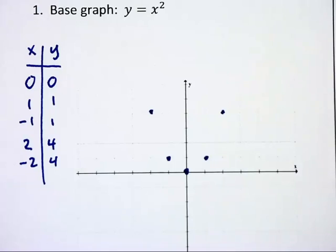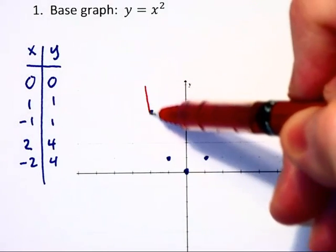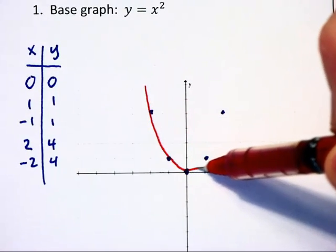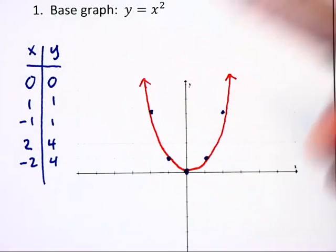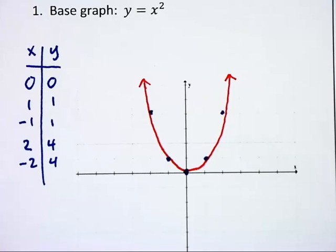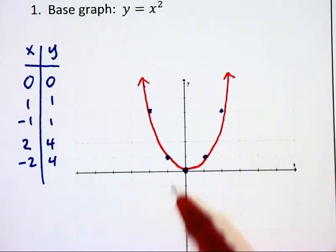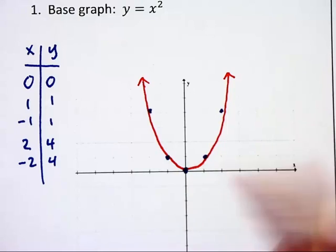As you can see, we are going to have a parabola or u-shaped graph that goes upward forever, and I'm putting these arrows at the top of the graph. Please note that this is smooth and rounded at the bottom.